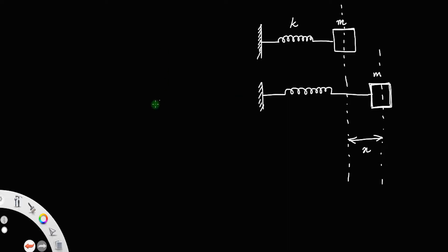From Hooke's law, the spring constant k remains the same. The force applied in order to stretch the spring through a distance x is equal to k times the extension — that is, spring constant into extension.